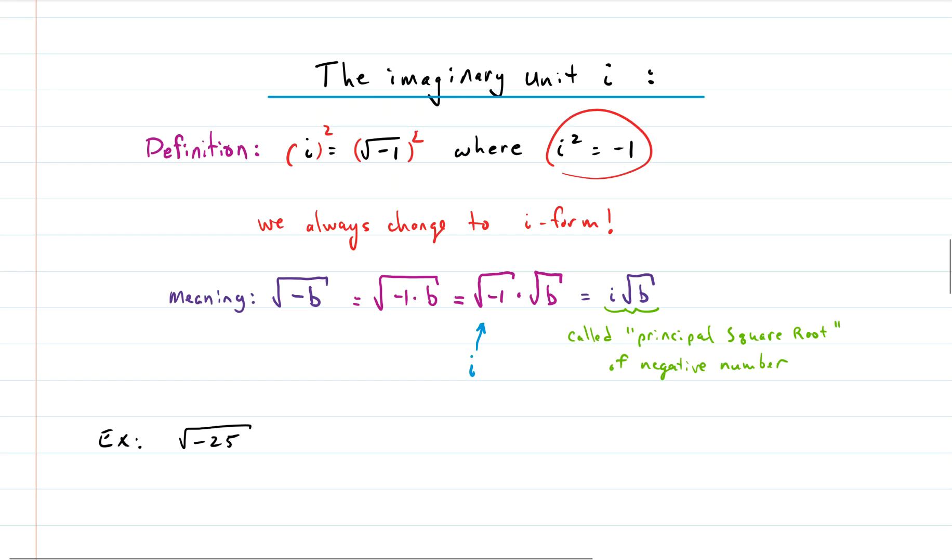And when we're dealing with negatives under even index radicals. The index, by the way, is the number out here in front. If it's not there, it's assumed to be a two. So we don't write it. But two is an even number. So this is an even indexed radical. And there's a negative underneath. We always change that negative to i form. Meaning that negative comes out front and becomes an i.